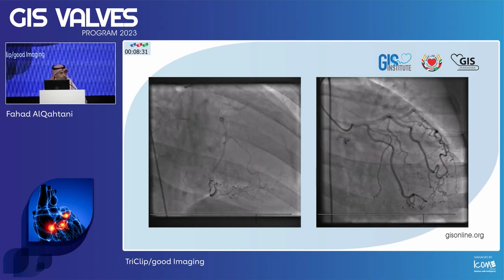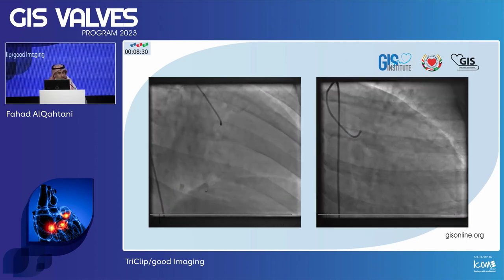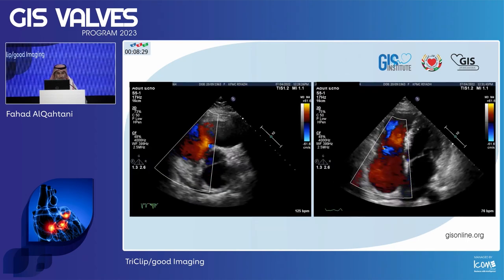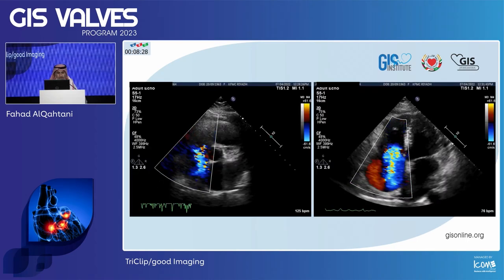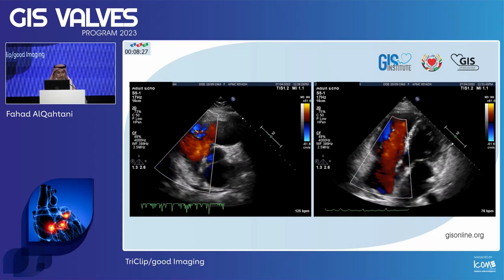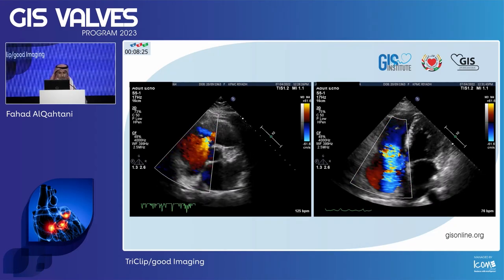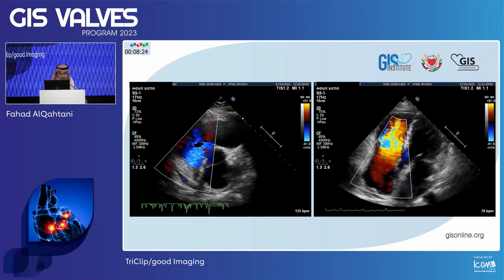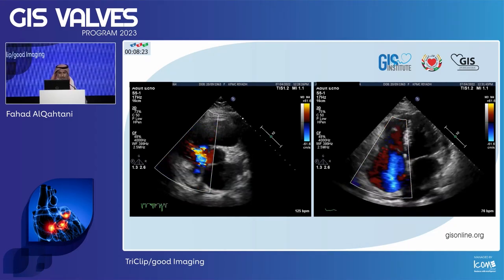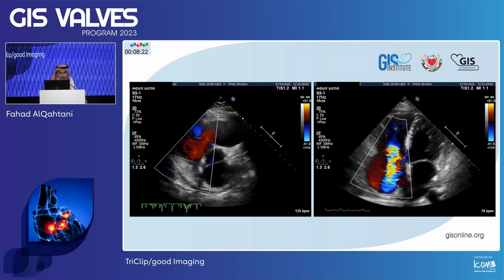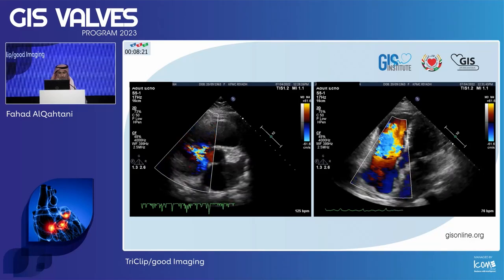Coronary angiogram was normal. This is the transthoracic echocardiogram showing torrential TR in the short axis and the apical four-chamber view.